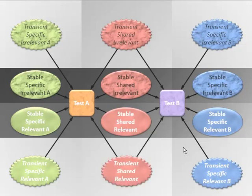Finally, some influences on test performance are shared and transient. For example, if we're measuring attention and a person comes to the testing session drunk, while drunk their attention really is worse, and it'll show up on both tests. So this would be something relevant to the construct — when you're drunk, your attention really is worse, and it's shared across both tests. But we don't expect someone to stay drunk all the time, at least not most people.